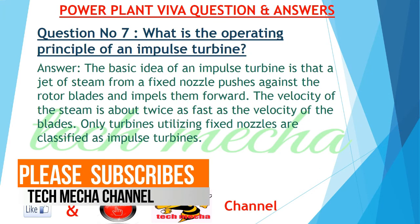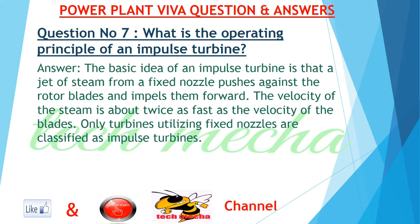Question number 7: What is the operating principle of an impulse turbine? The basic idea of an impulse turbine is that a jet of steam from a fixed nozzle pushes against the rotor blades and impels them forward. The velocity of the steam is about twice as fast as the velocity of the blades. Only turbines utilizing fixed nozzles are classified as impulse turbines.